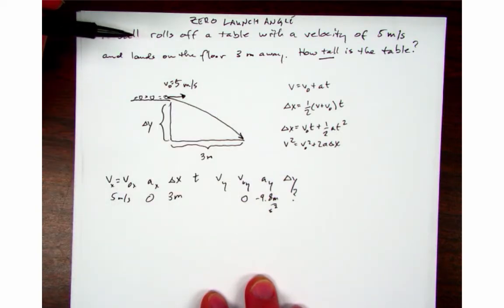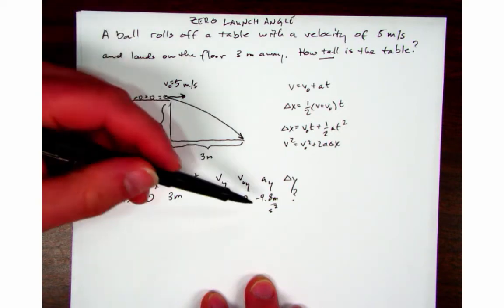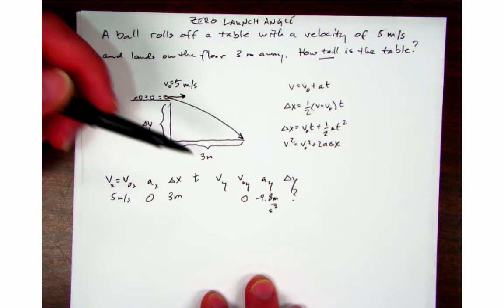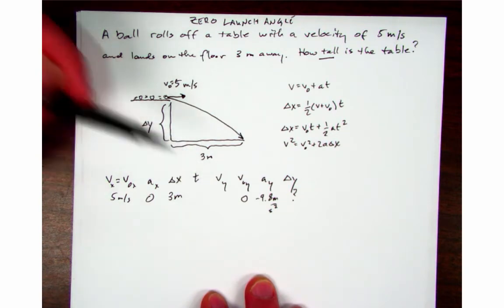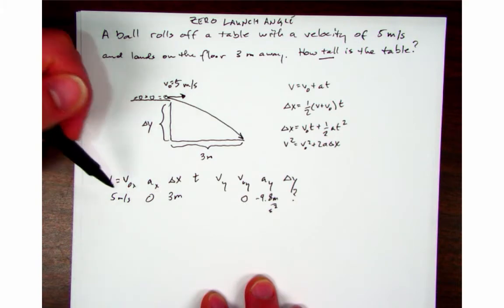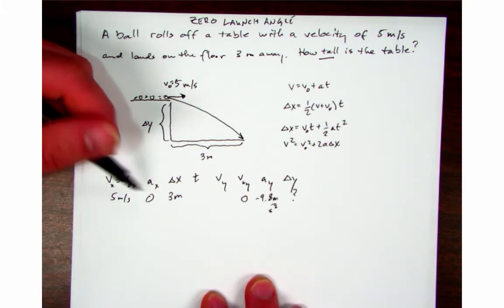Well, I want to find delta y. So the first thing I want to do is figure out can I figure out delta y just from y variables, but I only have two so that isn't enough. I'm going to have to get one more and the one more I'm going to get is time, and I'm going to get that from my x variables.